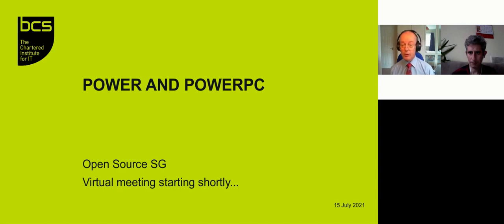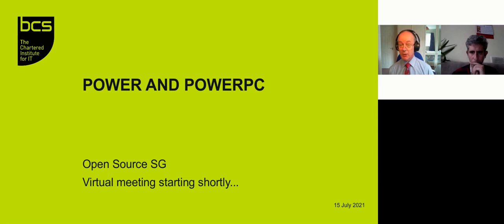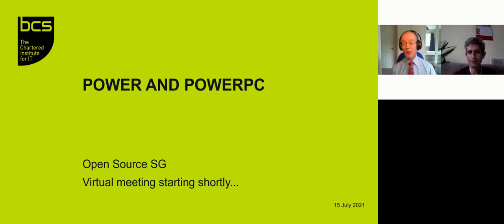Welcome all to the British Computer Society Open Source Specialist Group meeting for July 2021. This meeting has been organised by Seven Janian. Seven has been a member of our committee for many years, and this will be his last event that he organises because he's taking a well-deserved rest at the AGM and standing down. I'd just like to take the opportunity to thank Seven for all that he's done for us.